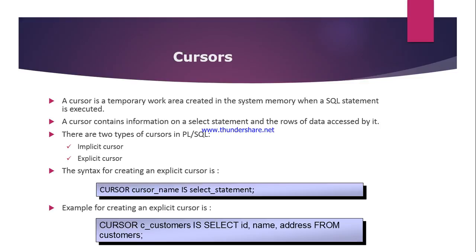The cursor contains the information on the select statement and the rows of data accessed by it. You can find all the information about the select statement inside a cursor. In PL/SQL, we have mainly two types: implicit cursor and explicit cursor. An implicit cursor is a default cursor — we cannot perform anything on it. Whenever a SQL statement returns only one row, that is called an implicit cursor. When a SQL statement returns more than one row, that is called an explicit cursor.